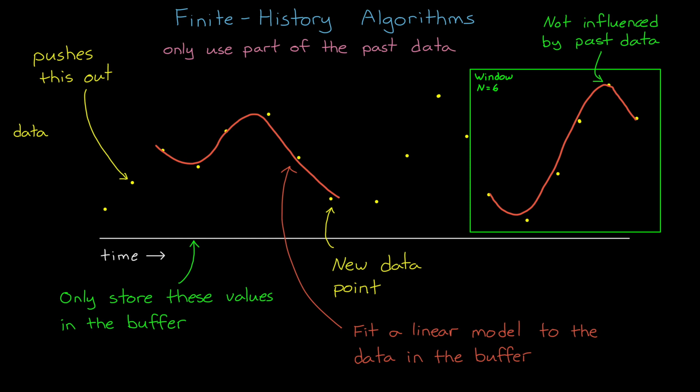Now a downside of finite history algorithms is that we need to store all of that data. And when we perform the identification step, we have to compute a model using all of that data. This can be potentially time consuming and resource intensive if the window needs to be really large to capture the essential dynamics of the system.